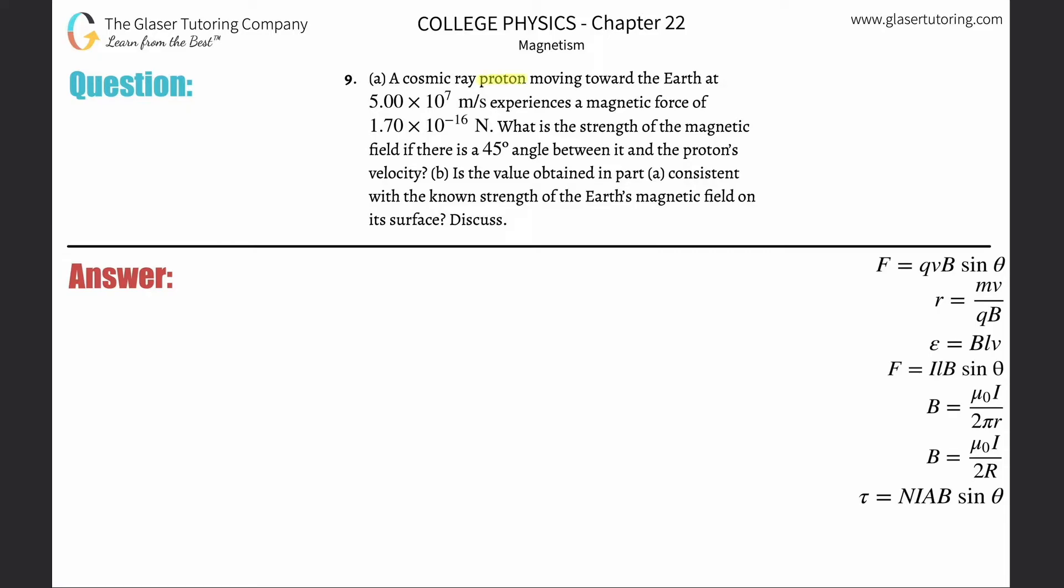Number nine, a cosmic ray proton moving toward the earth at 5 times 10 to the 7 meters per second experiences a magnetic force of 1.70 times 10 to the minus 16 newtons. What is the strength of the magnetic field if there is a 45 degree angle between the magnetic field and the proton's velocity?